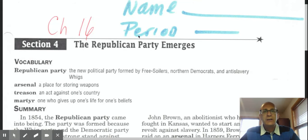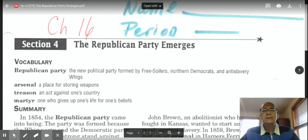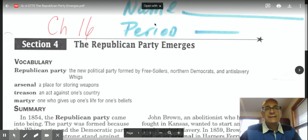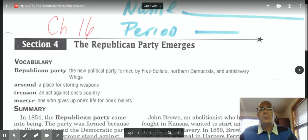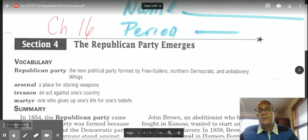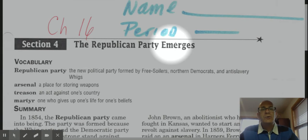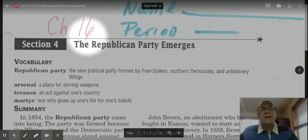Okay, 7th grade, welcome back. Hope you guys are doing well. We're looking today, continuing on Chapter 16 on slavery and the period 1820 to 1861. We're up to the emergence of the Republican Party. If you look at the title of this reading, the Republican Party emerges, and this is Chapter 16, Section 4.